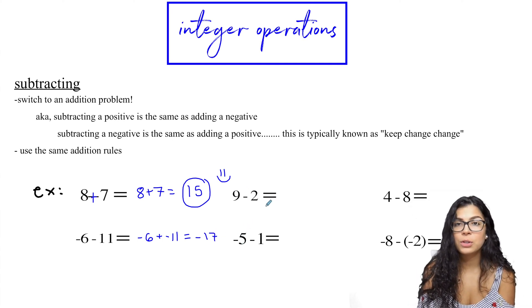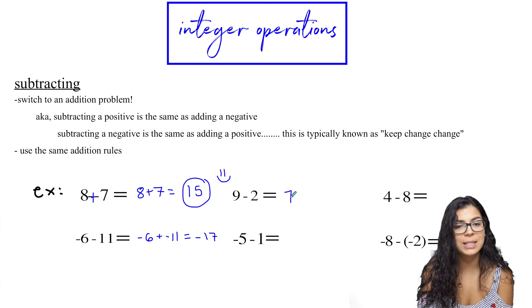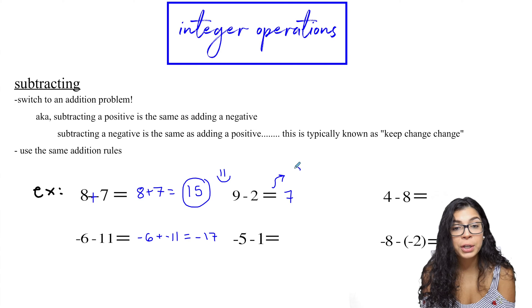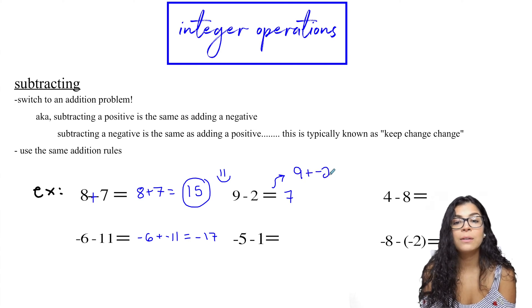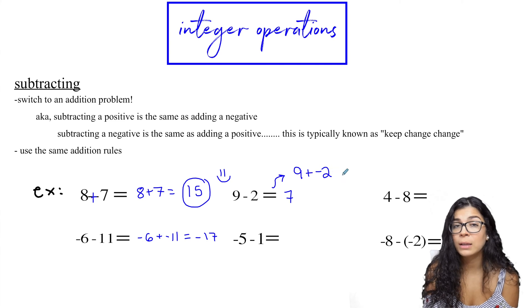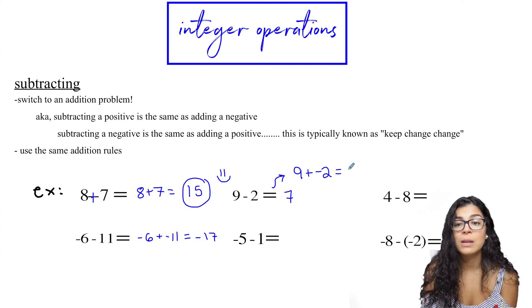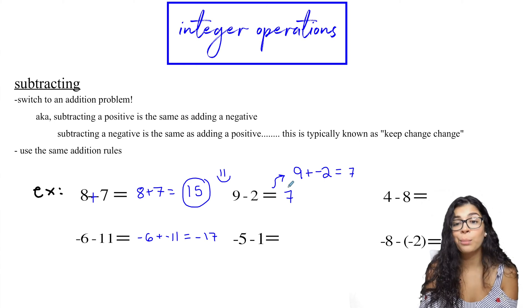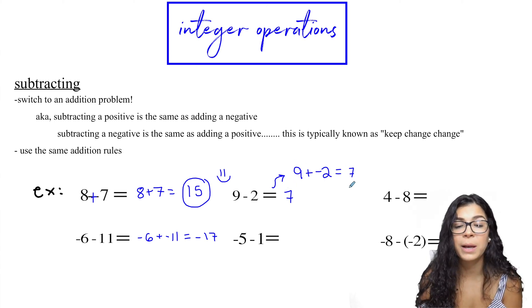Okay. Next up, nine minus two. Who needs to change this to an addition problem? Not me. Nine minus two is seven. If you really wanted to, side note, you could. Nine plus negative two. Then you have different signs. So you end up subtracting them. Nine minus two is seven. And then the nine is the higher number. So you take that sign and it's positive.